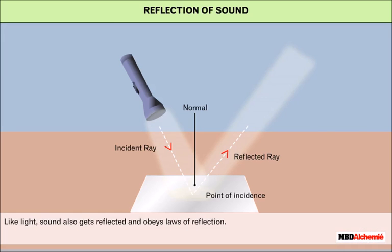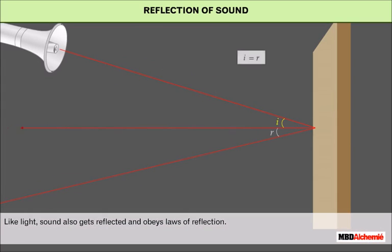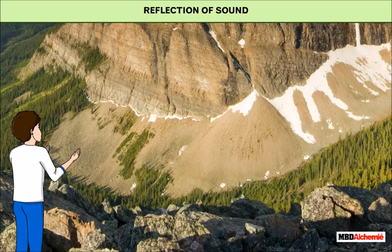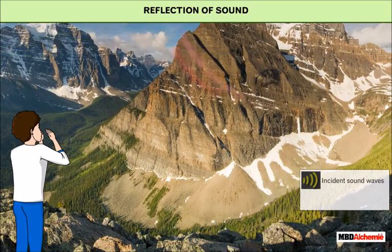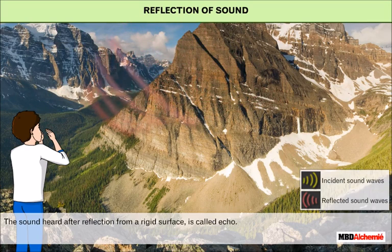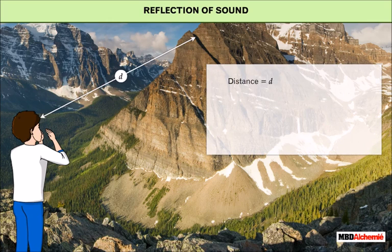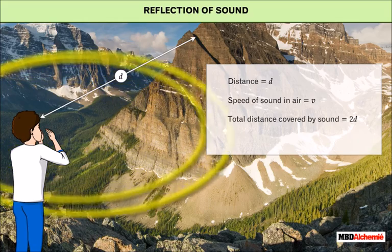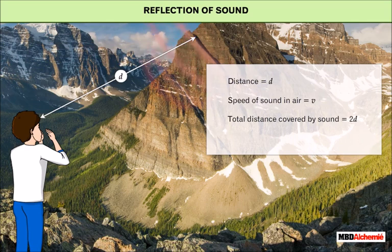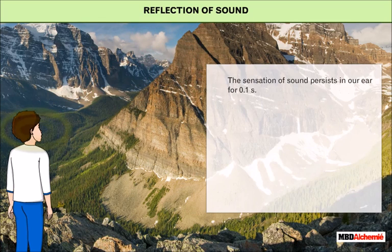Like light, sound also gets reflected and obeys the laws of reflection. If we shout inside an empty hall or near a mountain, we will hear the same sound again a little later. The sound heard after reflection from a rigid surface is called echo. Imagine that you are standing in front of a mountain which is at a distance d from you and the speed of sound in air is v. The distance covered by the sound to reach the mountain and come back to you is 2d and the time taken is t.